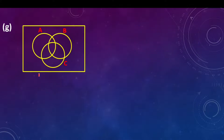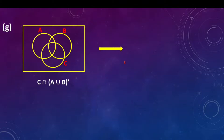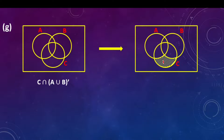Part G says C intersection (A union B) complement. A union B is all these members — those in A combined with those in B. Now they say complement, meaning they don't want those. So it could be these here and these which are in the universal set. The members that are not part of A and B combined are shaded here.